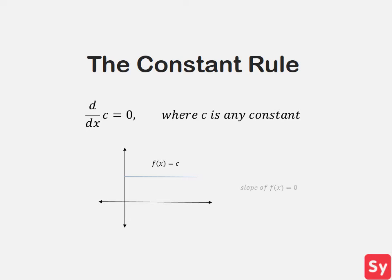The slope of this function at any point is zero because the function is not increasing or decreasing and staying constant.